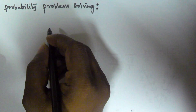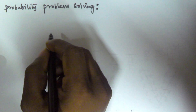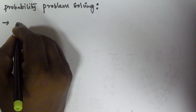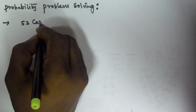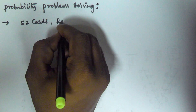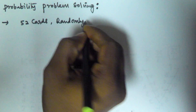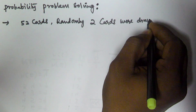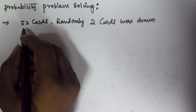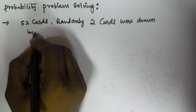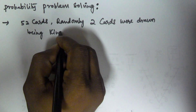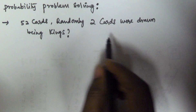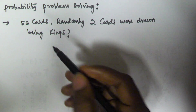Hello friends. In this video we will see a problem related to probability with respect to cards. From the pack of 52 cards, randomly 2 cards were drawn. What is the probability of both the cards being kings?